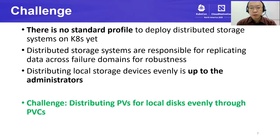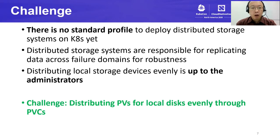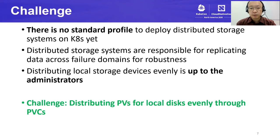We use Rook to deploy a Ceph storage cluster. Rook has a mode to configure OSDs through persistent volume claims. Rook configures acquired PVs as OSDs for Ceph, and then Ceph constructs a unified storage resource. What we wanted to do was to deploy a distributed storage system on our on-premise servers. We had experienced that the management of thousands of servers and disks was an awful task if done manually. So we needed Kubernetes help for automatic management. However, there was no standard profile to deploy a distributed storage system on Kubernetes.